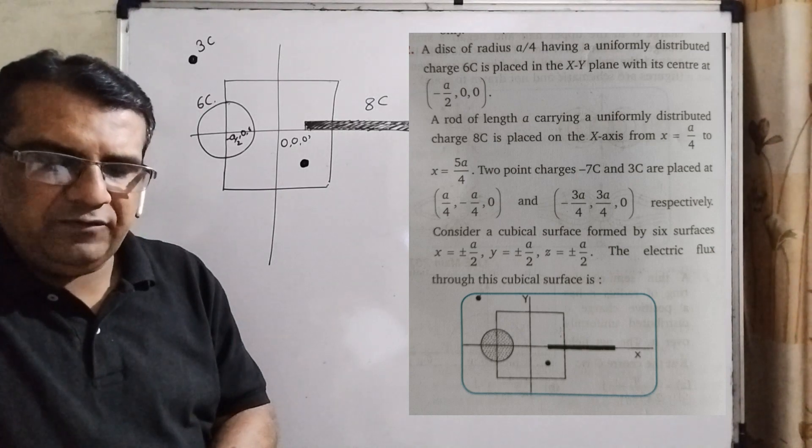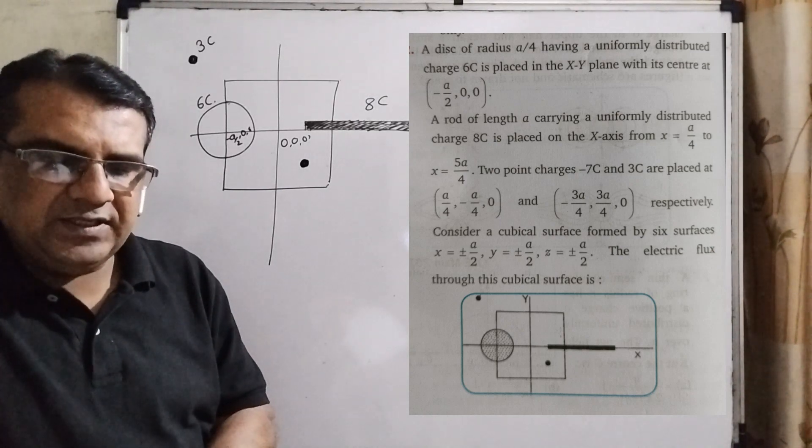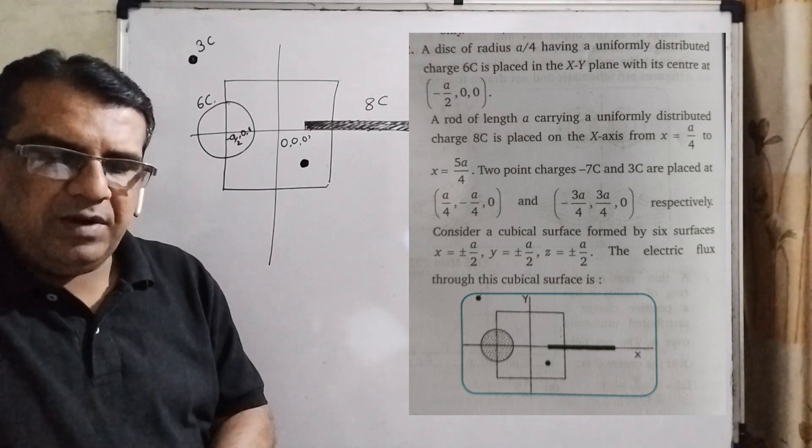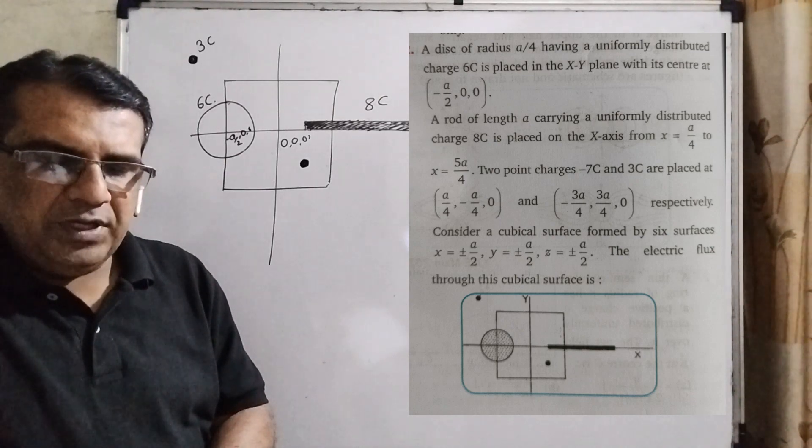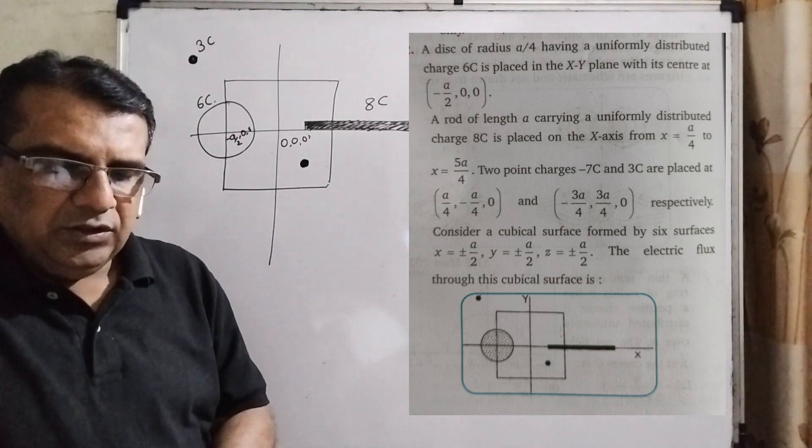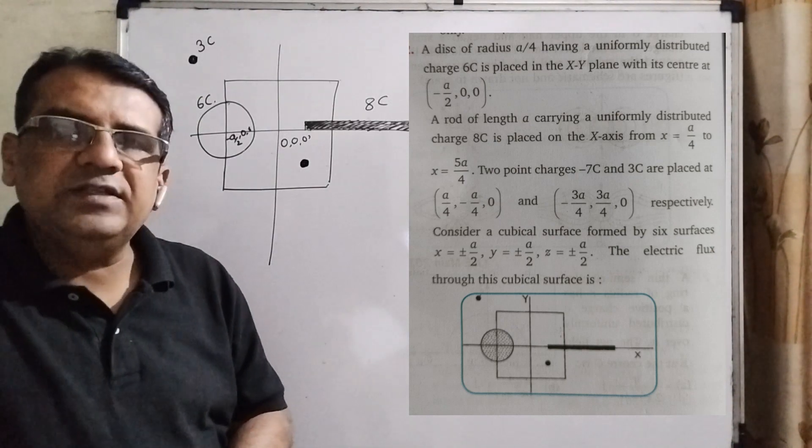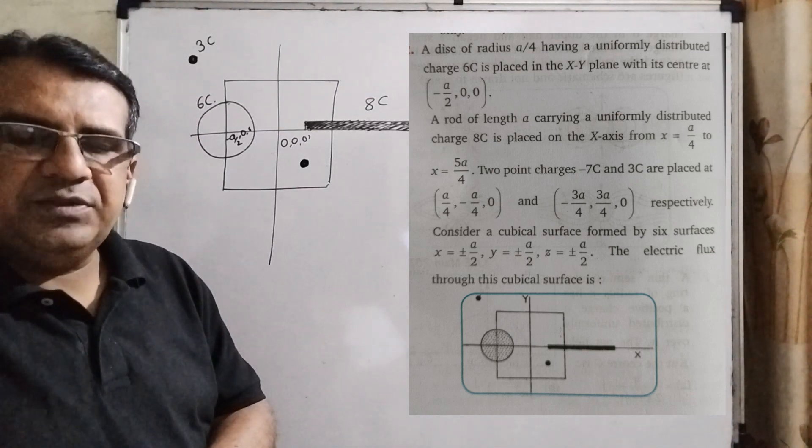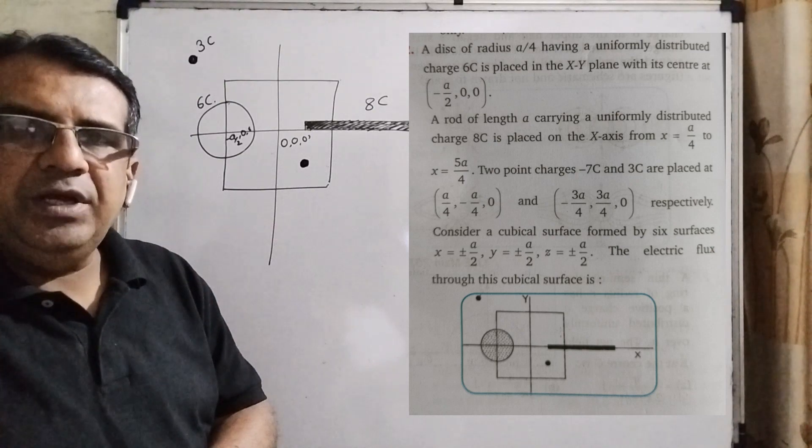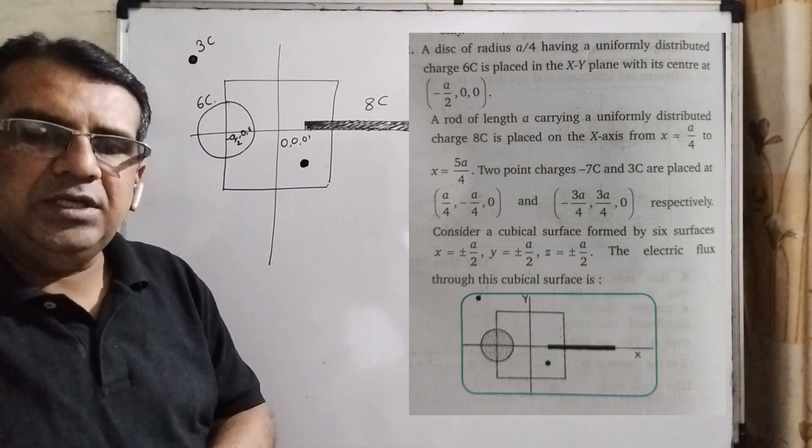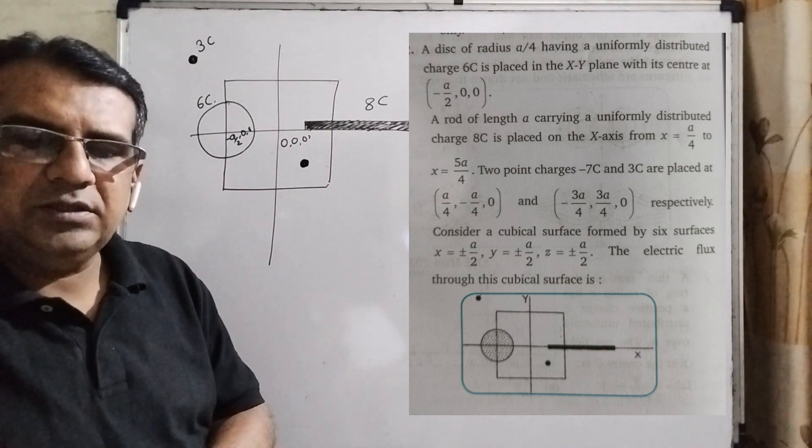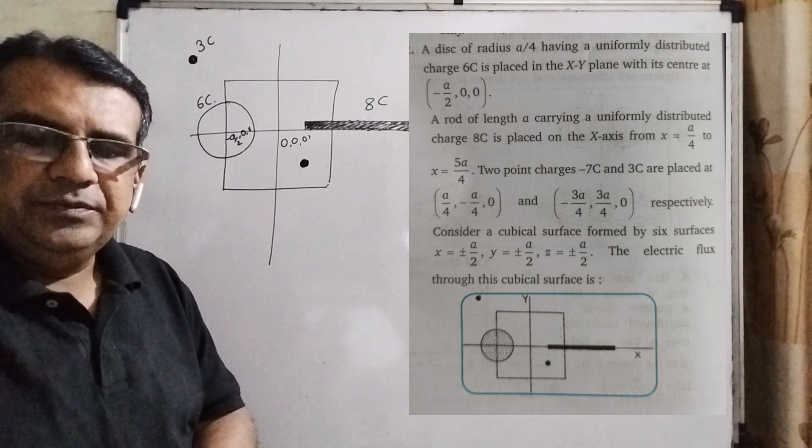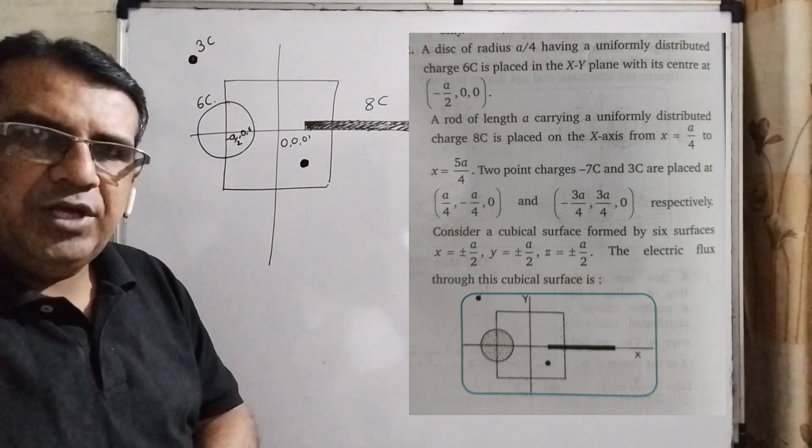Consider a cubical surface formed by six surfaces x = ±a/2, y = ±a/2, and z = ±a/2. The electric flux through this cubical surface is—you have given 4 options. Option A: -2C/ε₀, Option B: 2C/ε₀, Option C: 10C/ε₀, Option D: 12C/ε₀. This question is from JEE 2009.